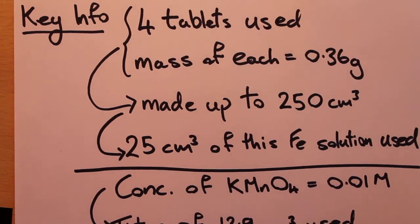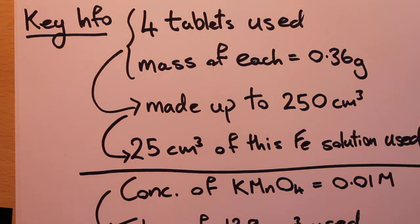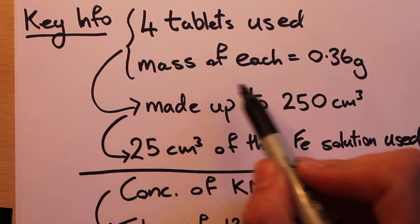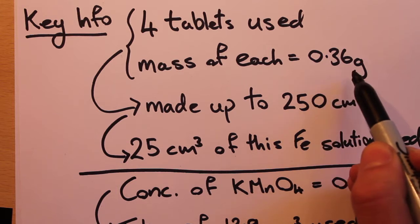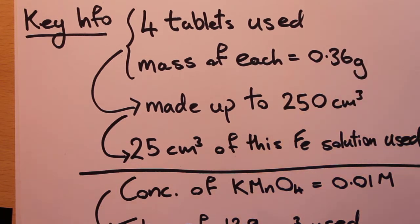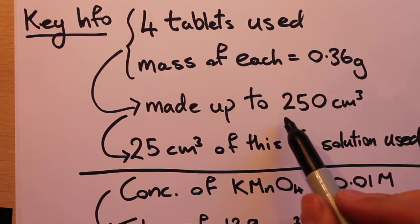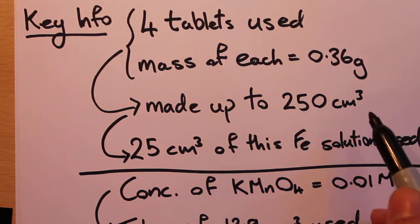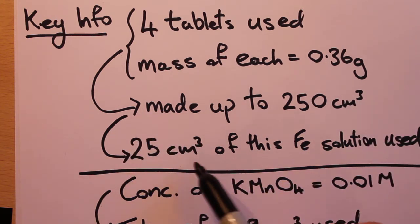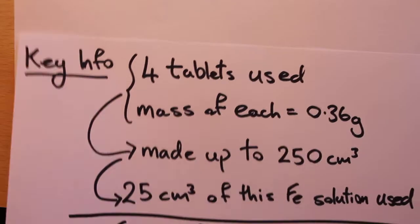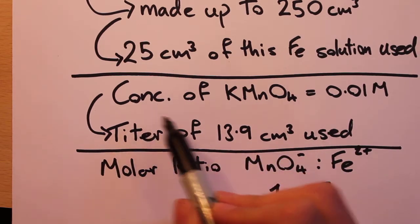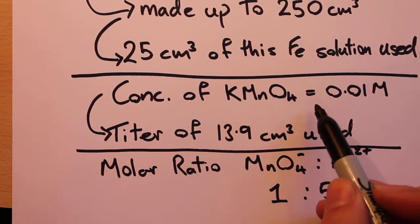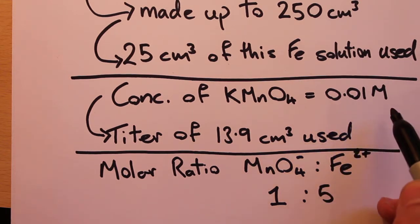So you should have something that looks like this. The key information we're told is that four tablets are used in this experiment, and that the mass of each tablet is 0.36 grams. These tablets were crushed up and made up to a volume of 250 cm³. Then 25 cm³ of this iron solution was used.